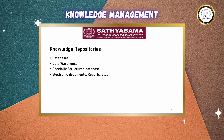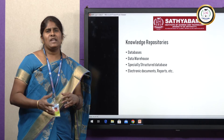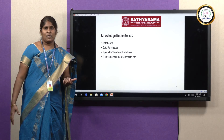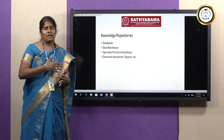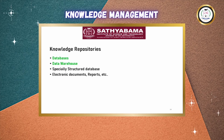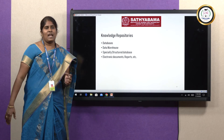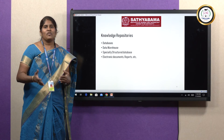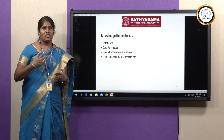Next we will look at knowledge repositories. We need some place to store this knowledge, and there are different types of repositories depending on organization usage. One is the database, where you can have only table format data. Next comes the data warehouse, where you can store all forms of data. In a knowledge system, you make use of a dynamic data warehouse because every day the knowledge keeps getting updated. You can also have a specially structured database depending on the organization's requirement, and electronic documents like emails and reports where you store information. An example of a dynamic data warehouse is the Google server, where all forms of information are available, and whenever you need it, you search via a browser, get the information, learn it, and acquire knowledge.